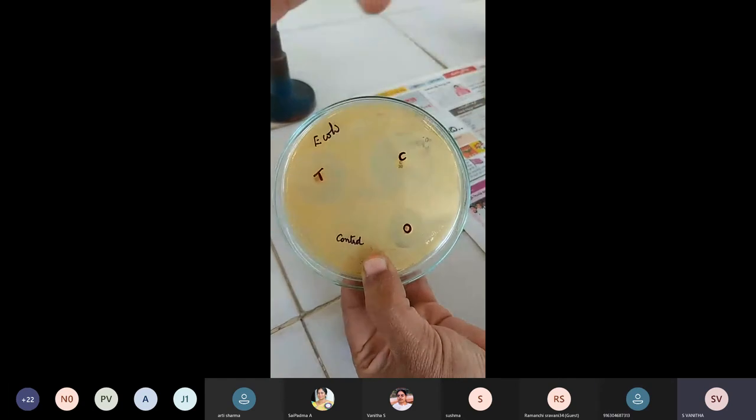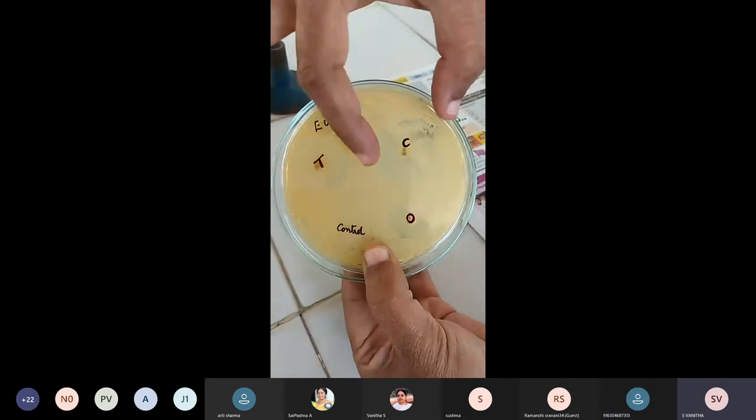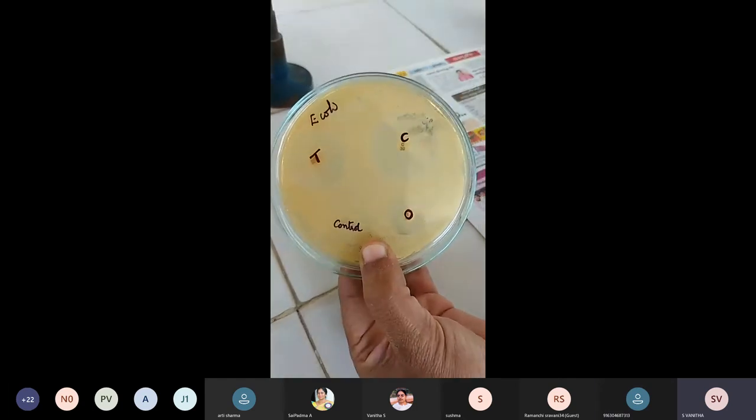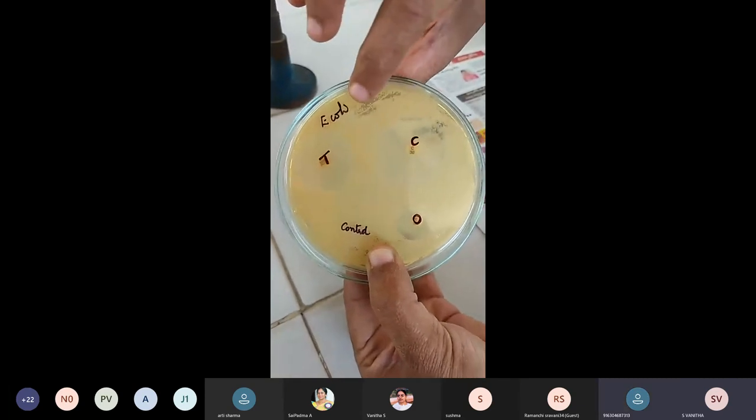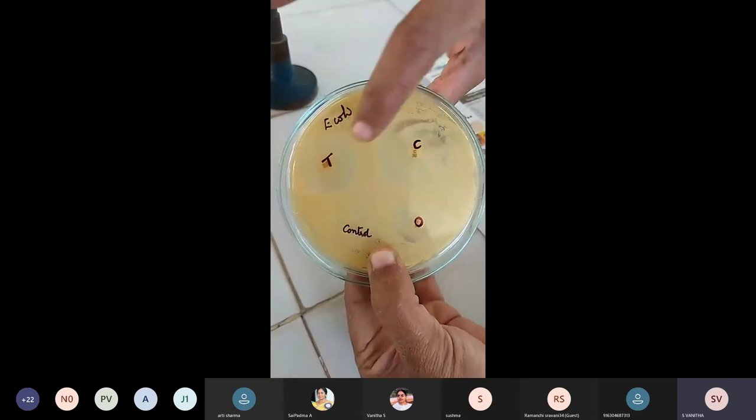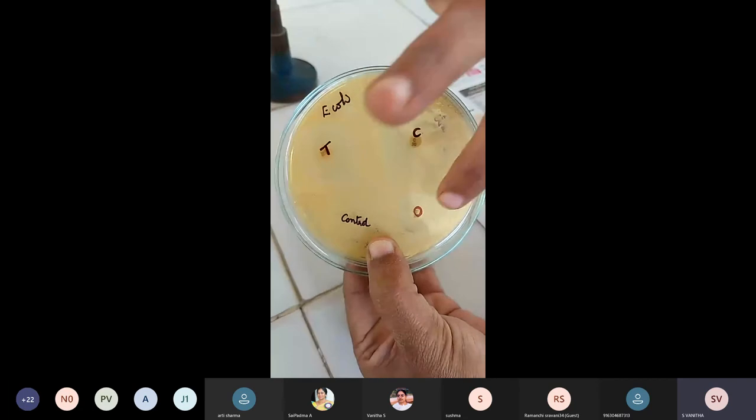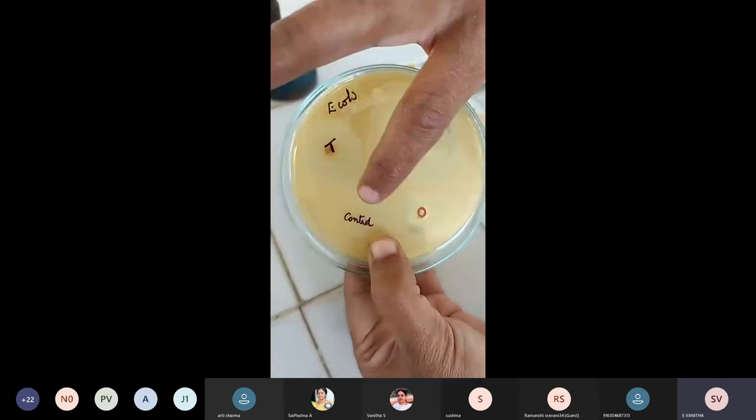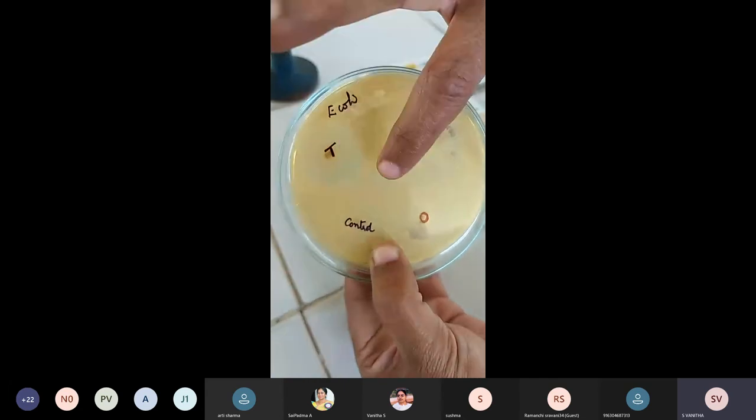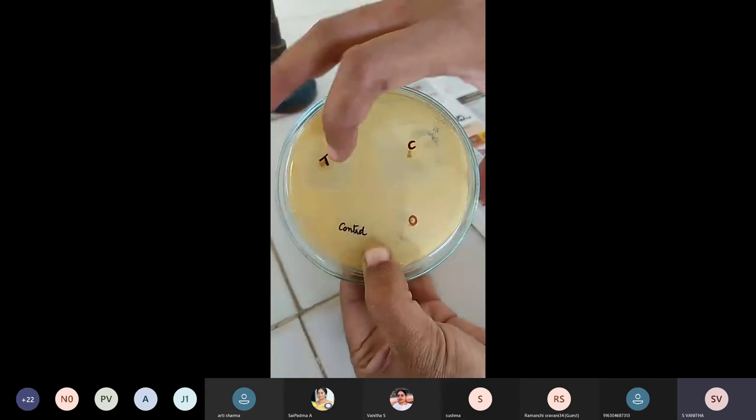So this is the diameter. Using a scale, you have to measure the diameter of the zone of inhibition. Remember, this is E. coli cells, and you can see the zone of inhibition for all three antibiotics. For the control where we have kept just the disc, you are not able to find any zone of inhibition.